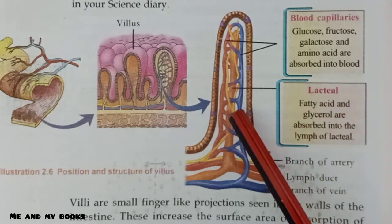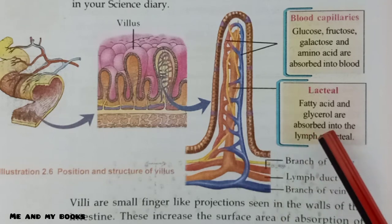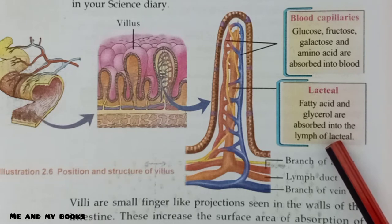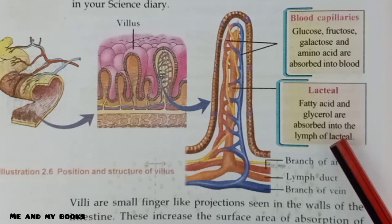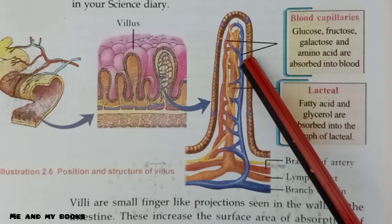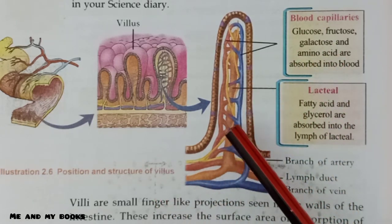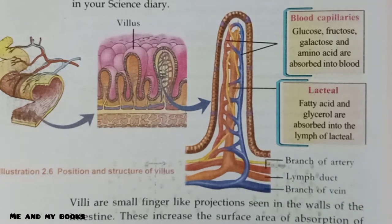What is the function of the lacteal? Fatty acid and glycerol are absorbed into the lymph of the lacteal. Inside the lacteal, lymph is present. Lymph is a fluid. Fatty acid and glycerol are absorbed into the lacteal and from there supplied to the body.